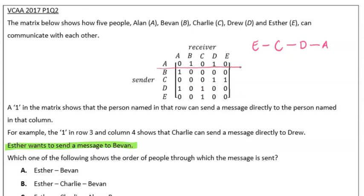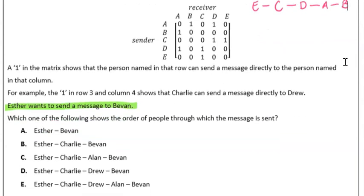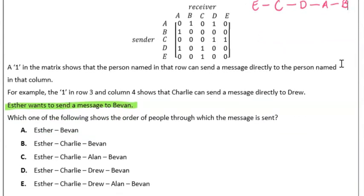We then look at Alan. Alan can communicate with Bevan and Drew. Again, don't want to pass the message back, and more importantly, we want this message to get to Bevan, so that is our end goal. Now if we consider, well, out of the options that we have, we want to see that chain: Esther to Charlie to Drew to Alan and then finally to Bevan. We can see that we have that here in option E.